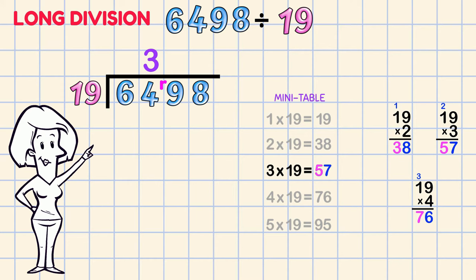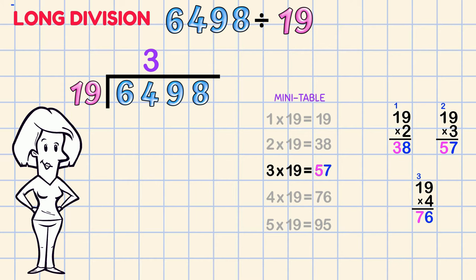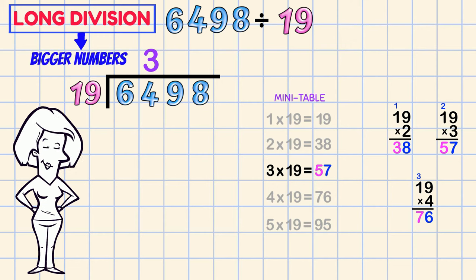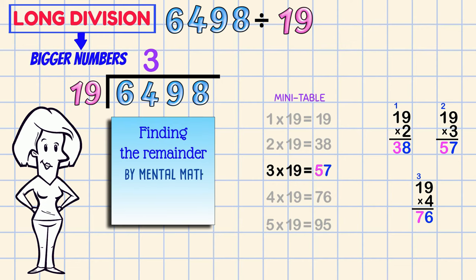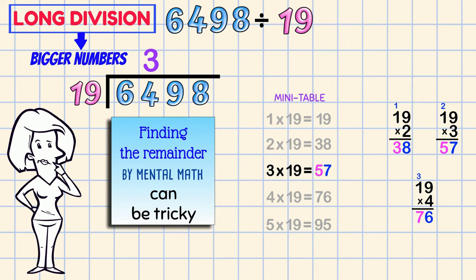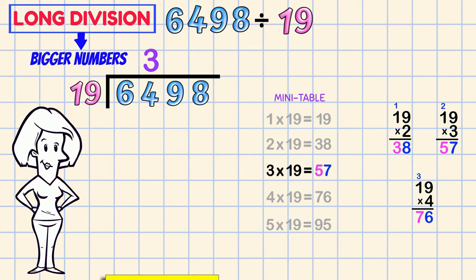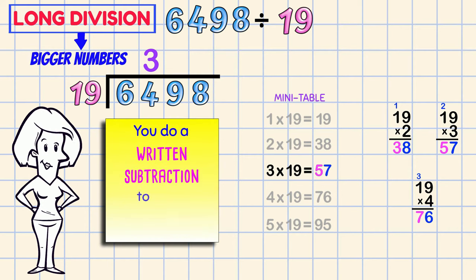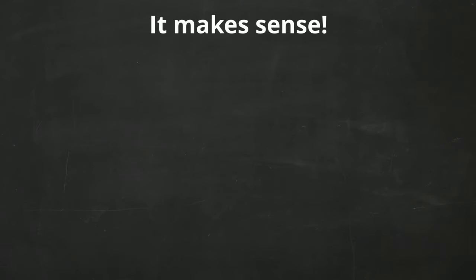ready to form the next number in the problem. But in long division, we're dealing with bigger numbers. And finding the remainder by mental math can be tricky. So you find it in a different way. You do a written subtraction to avoid a mistake in your mental math. It makes sense!